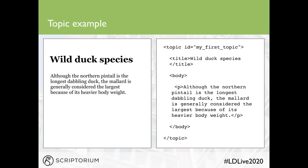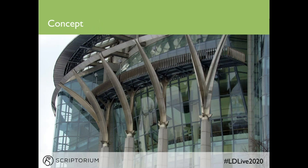When testing ideas you might use the generic topic type, but when writing you'll use a more specialized type such as concept, task, reference, or glossary entry. The concept topic provides conceptual information — it answers the question 'why?' It provides background information about a subject that the reader needs to know. Concepts usually contain paragraphs of text and lists, but can also include notes, tables, graphics, figures, and various things needed to understand the ideas behind a particular subject.